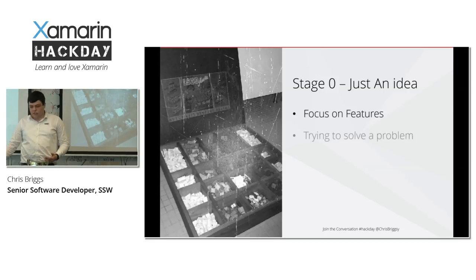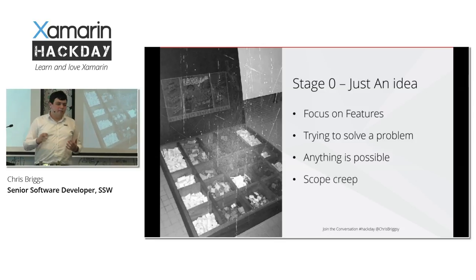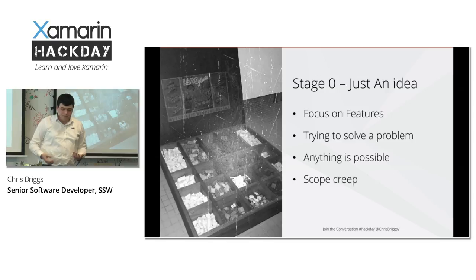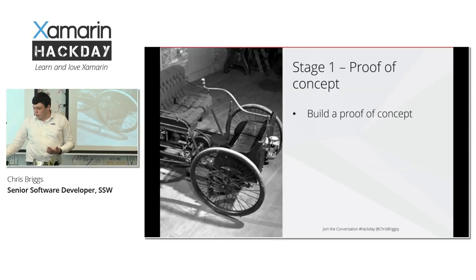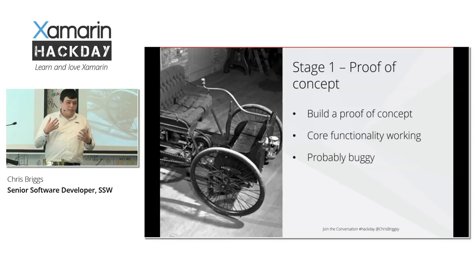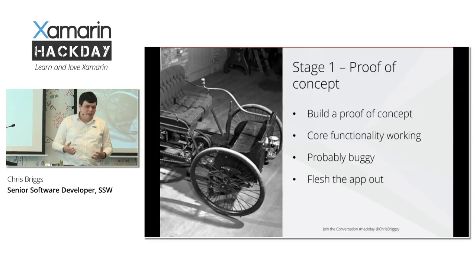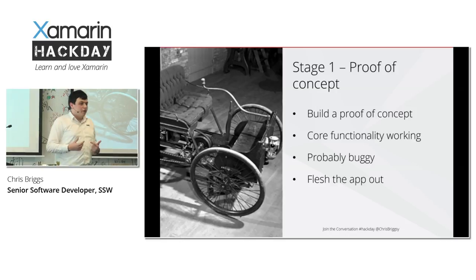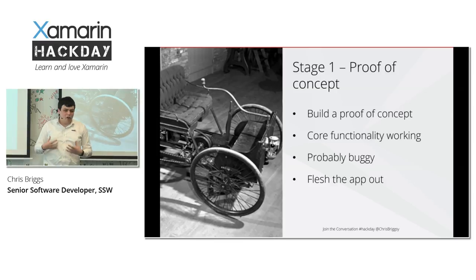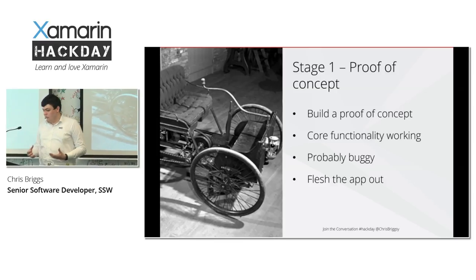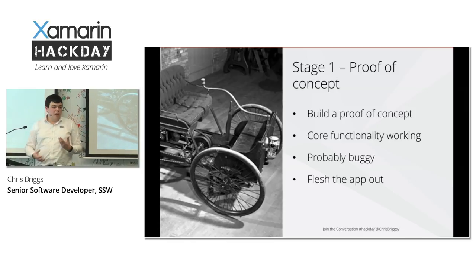Apps start off as just an idea — you've thought of a problem you're trying to solve, you think anything is possible, and public enemy number one is scope creep. Then we manage to make the proof of concept: we build it, the core functionality is working, it's very buggy, and we're still fleshing the application out. We think we're ready to move into beta testing, but we've really only tested the application in our own dev environment, which normally has really good Wi-Fi or on a simulator that has no networking issues.